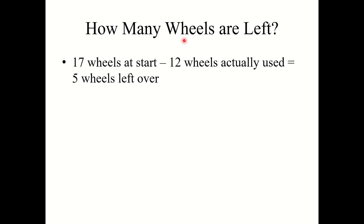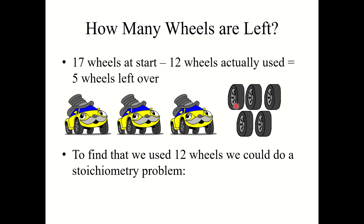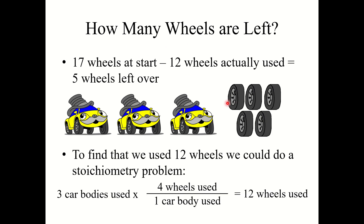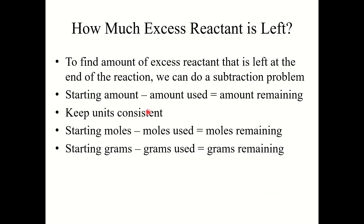Let's go back to the wheels analogy. There were 17 wheels at the start, 12 wheels actually used, which means 5 wheels left over. To calculate this: 3 car bodies used times 4 wheels per car body equals 12 wheels used, then 17 minus 12. If asked how much excess reactant is left over, take the starting amount minus the amount used to get the amount remaining. Make sure you keep your units consistent — if doing it in moles, stick with moles; if in grams, stick with grams.